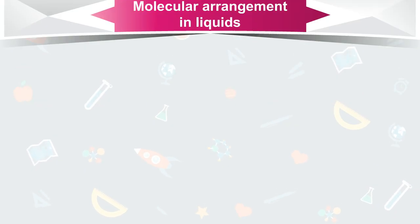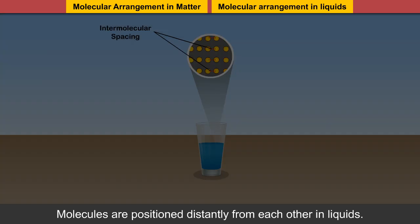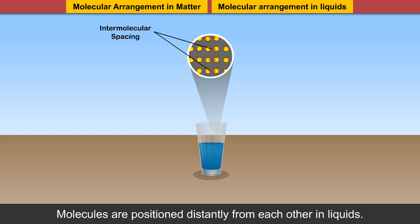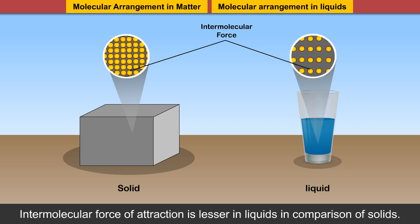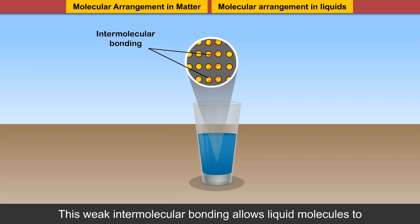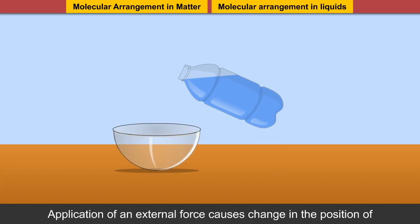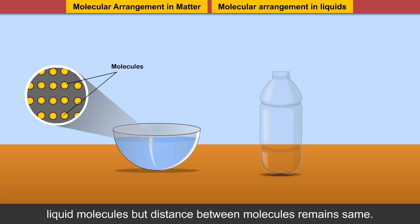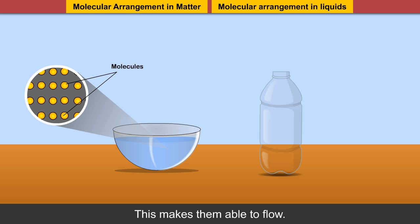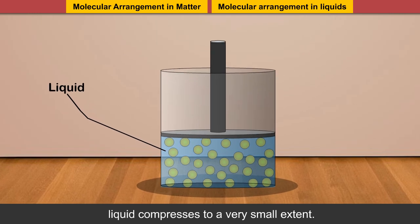Unlike solids, intermolecular spacing is not negligible in liquids. Molecules are positioned distantly from each other in liquids. Unlike solids, liquids are not rigid in nature. Intermolecular force of attraction is lesser in liquids in comparison to solids. This weak intermolecular bonding allows liquid molecules to get displaced from their place and enables them to flow. Application of an external force causes change in the position of liquid molecules, but distance between molecules remains the same. An application of extremely high pressure causes liquid to compress to a very small extent.